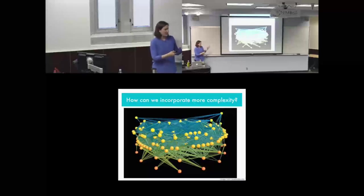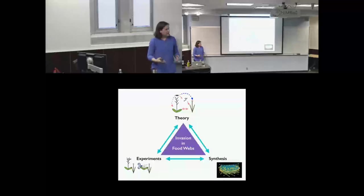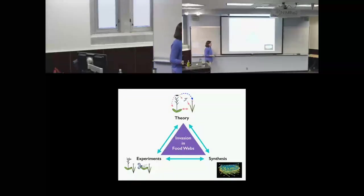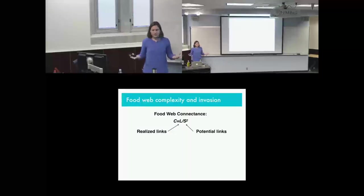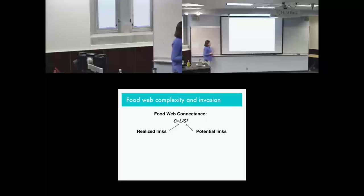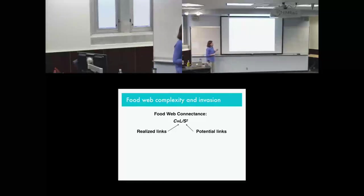I wanted to broaden this view of complexity to think more about food webs with many species and many interactions. I decided the best approach was a literature synthesis. To understand the relationship between food web complexity and invasion, I needed to distill food web complexity into something measurable — so I used connectance. Food web connectance is the proportion of potential links within a food web that are actually realized.